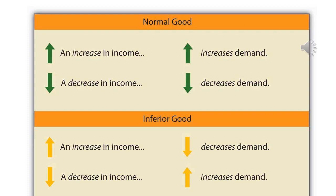Income elasticity of demand uses the same calculation, but the meaning of the result is different. An increase in income will often increase demand for a product, and a decrease in income will decrease demand. This is the opposite of price elasticity — here we get a positive value. The size of that increase determines how elastic it is, and this applies to normal goods.